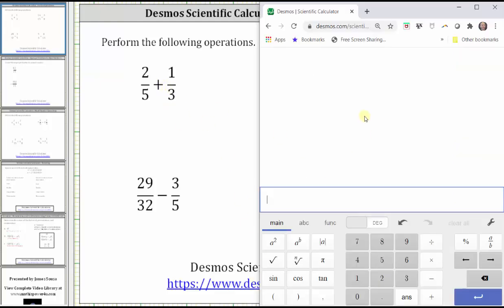For two-fifths, the easiest way is probably to enter two divided by five, which gives us two-fifths. Or if we clear this, we can also use the fraction key in the upper right-hand corner, enter the numerator of two, either click on the denominator or click tab from the keyboard, and enter the denominator of five.